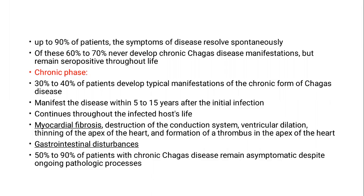Ninety percent of patients see their symptoms resolve spontaneously. Only 30 to 40 percent develop typical clinical manifestation of the chronic form, which manifests within 5 to 15 years after the initial infection. It affects two major systems — the heart and the gastrointestinal tract. In the heart, extensive fibrosis leads to destruction of the heart, development of heart failure, thinning of the myocardium, aneurysmal formation with thrombus inside, and thromboembolic phenomena. In the gastrointestinal tract, it destroys the mesenteric myocardium, leading to megacolon and megaesophagus.